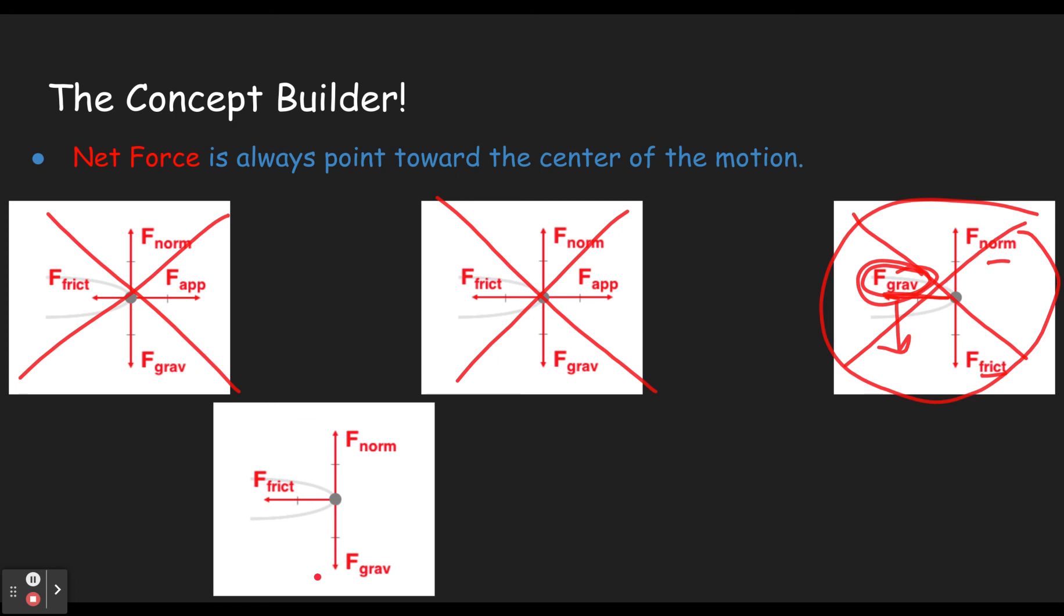For example, this would be correct if we were talking about a road and a car. This is going to be my car from behind. Okay. Maybe he's got some tail lights. If the car from behind, the normal force between the car and the road is indeed pushing up. If the car is turning like this, friction is pushing the car this way. And gravity is pulling the car down.